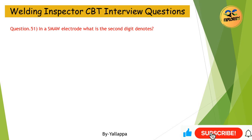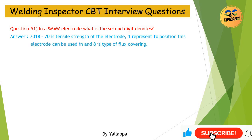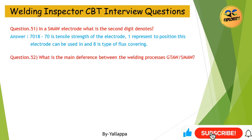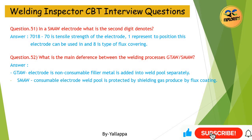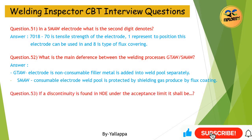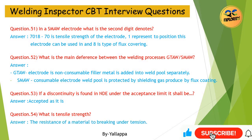Question 51: In a SMAW electrode, what does the second digit denote? Answer: For example, E7018 — 70 is the tensile strength of the electrode, 1 represents the position the electrode can be used in, and 8 is the type of flux covering. Question 52: What is the main difference between GTAW and SMAW? Answer: In GTAW, the electrode is non-consumable and filler metal is added to the weld pool separately. In SMAW, the electrode is consumable and the weld pool is protected by shielding gas produced by the flux coating. Question 53: If a discontinuity is found in NDE and is under the acceptance limit, it shall be? Answer: Accepted as it is. Question 54: What is tensile strength? Answer: The resistance of a material to breaking under tension.